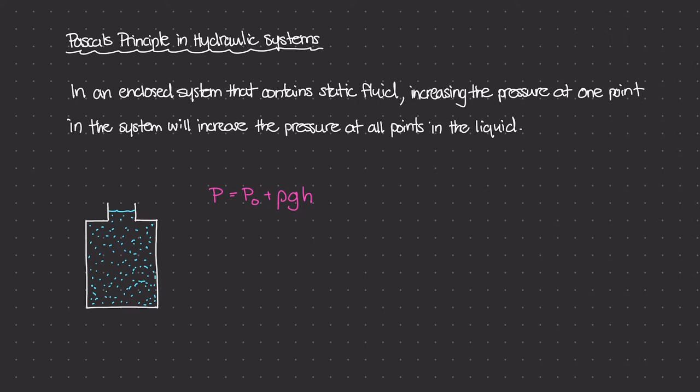And really this equation gives us the pressure value inside of a container at any depth H, given that we have some sort of initial pressure, we know the mass density of the liquid in the container, and we have our gravitational constant.